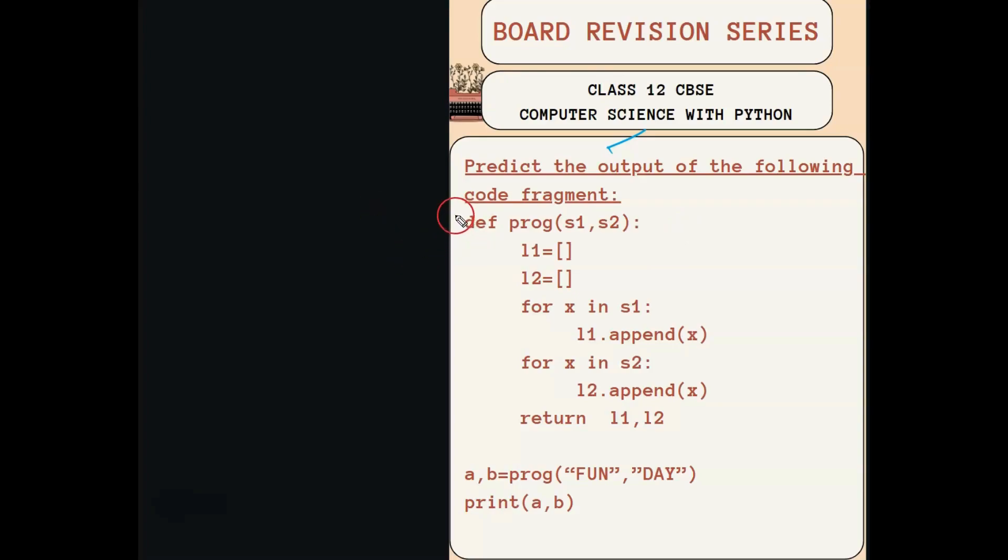First, the flow of execution begins on the function header statement. This function header statement has the function name as prog, and it has two arguments s1 and s2 respectively. After reading the function header statement, all the statements inside this function will not get executed. It will get skipped.